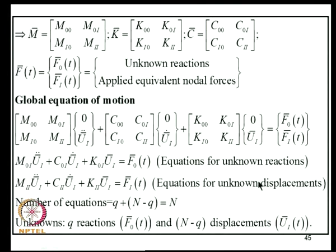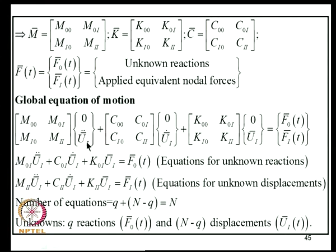Writing the globally partitioned equation of motion, we see that the specified (zero or prescribed) displacement components are associated with unknown reactions R, while the unknown displacements U_I_bar are associated with known applied forces. This gives N total equations: Q equations for unknown reactions (first block row) and N-Q equations for unknown displacements (second block row). To find the unknown displacements, we solve the second-block equation; reactions are then determined by back-substitution into the first-block equation.